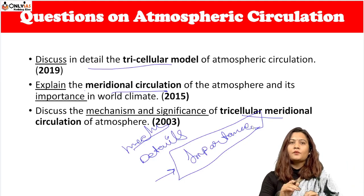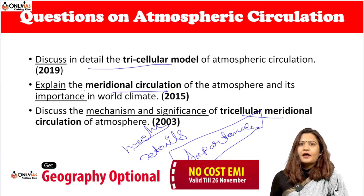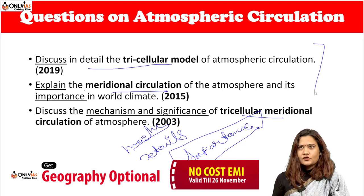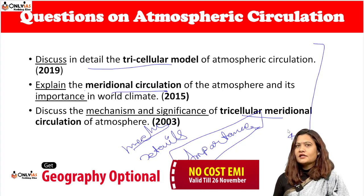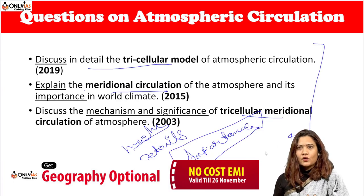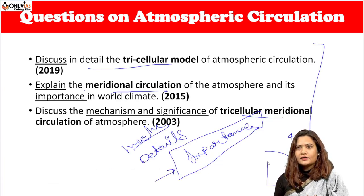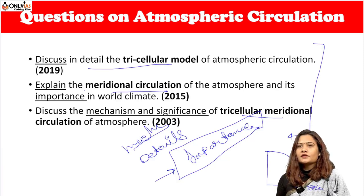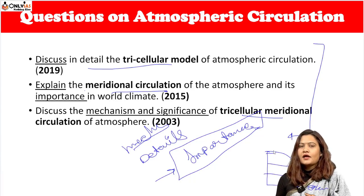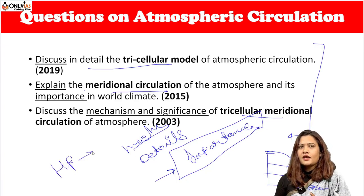Let me quickly revise how to do this question. When you have this question, first write what is the tri-cellular or meridional circulation. You will note that within the atmosphere there are three cells depending upon the equatorial low area, subtropical high pressure area, subpolar low pressure area, and polar high. The basic concept is that wind moves from high pressure towards low pressure.